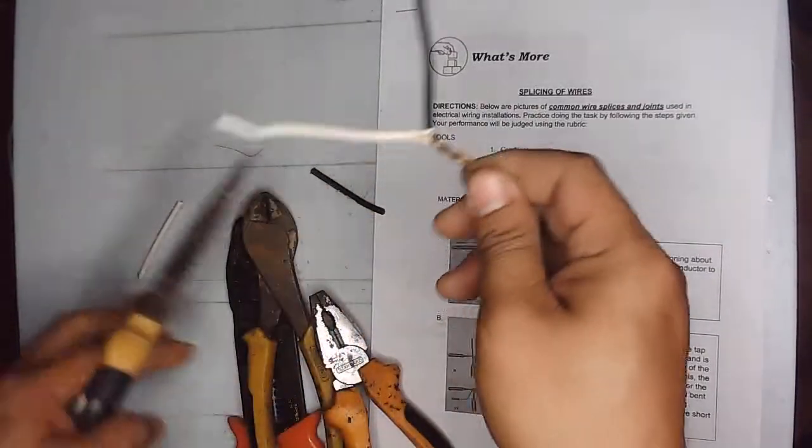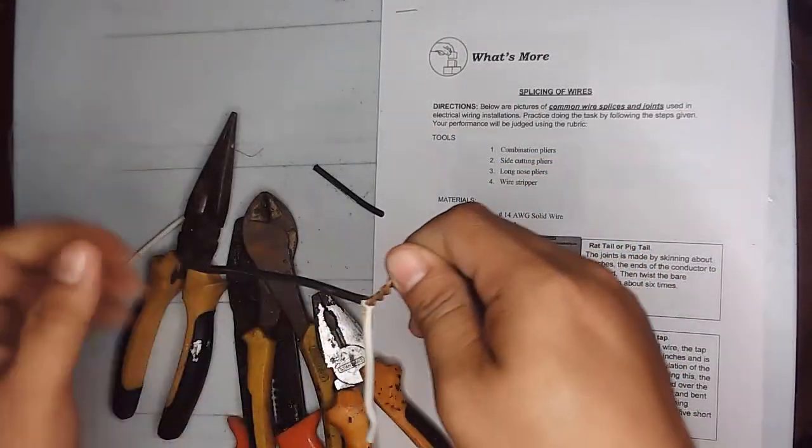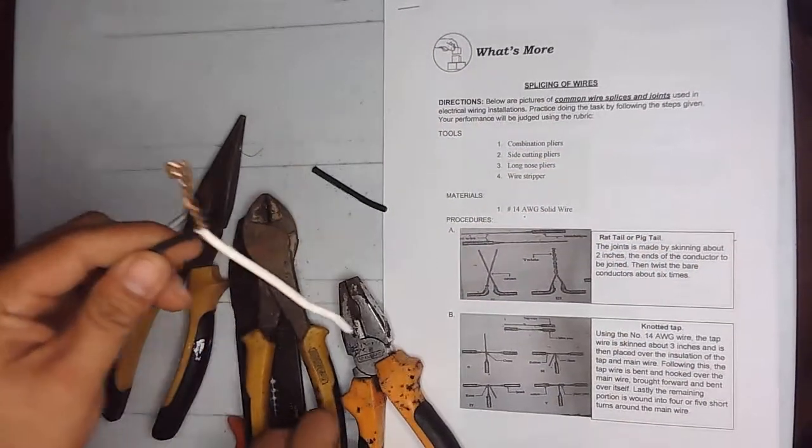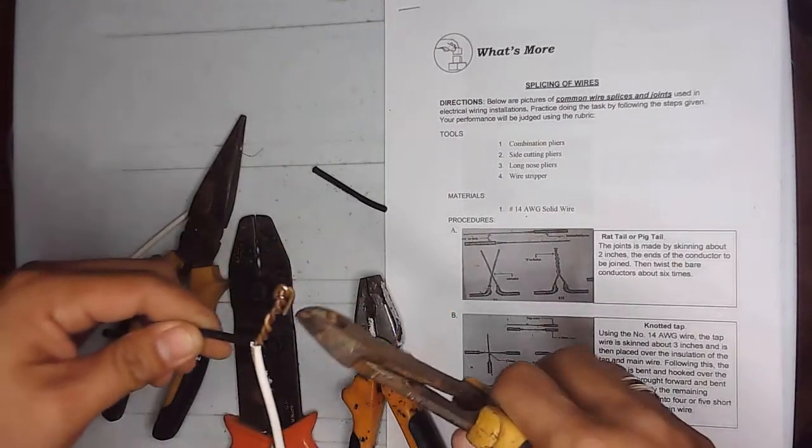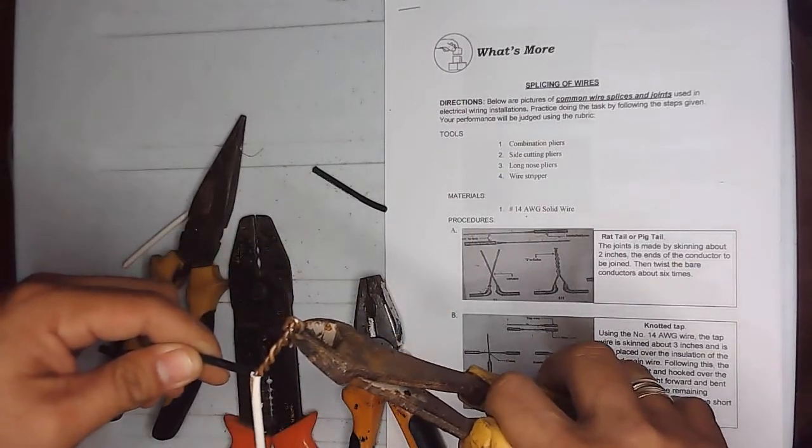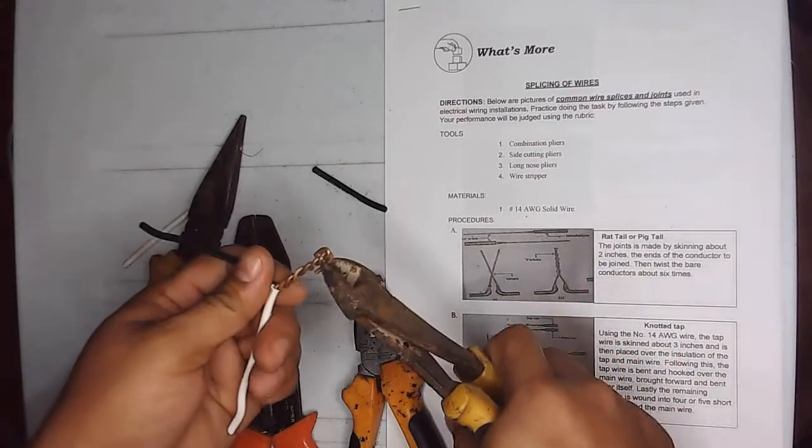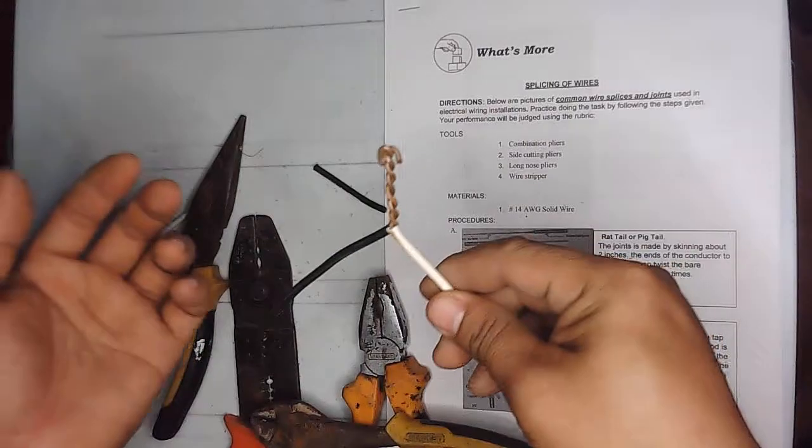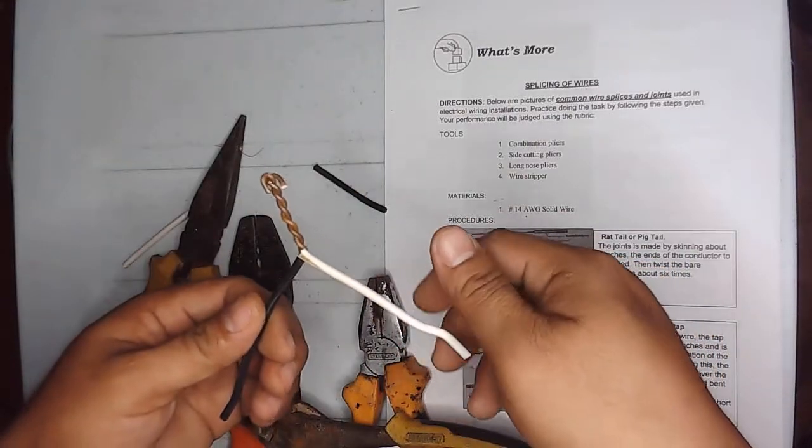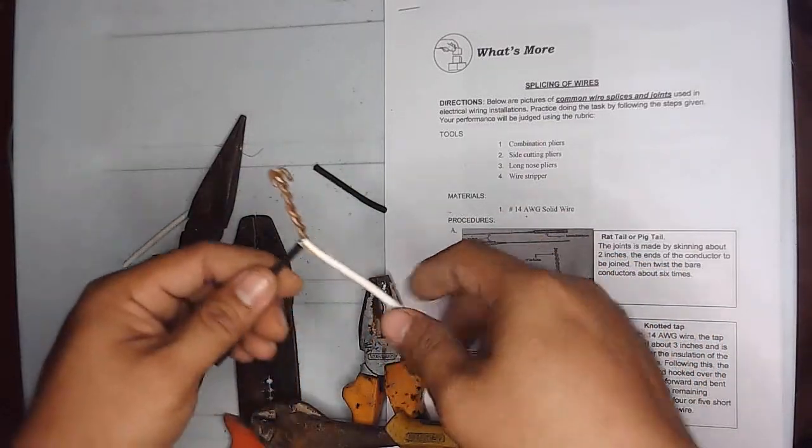To make it nice and presentable, cut the excess wire here. And you're done with your rat tail joint. Thank you.